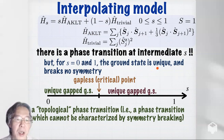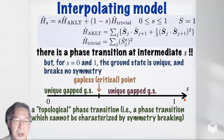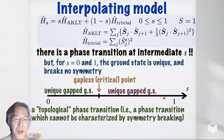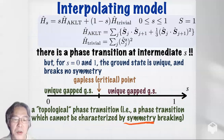We should note that at s = 0 and s = 1, the ground state is unique and breaks no symmetry. Usually a phase transition is characterized by the presence or absence of some symmetry breaking. But here there is no symmetry breaking on either side. So this is an exotic phase transition — a topological phase transition in the sense that it cannot be characterized by symmetry breaking.